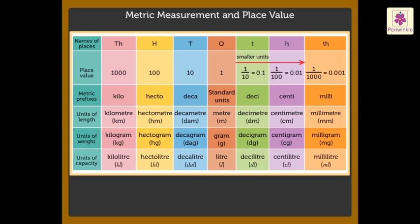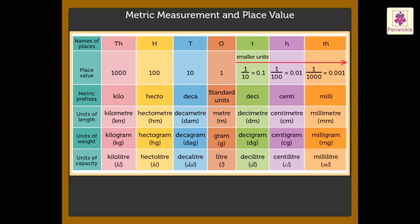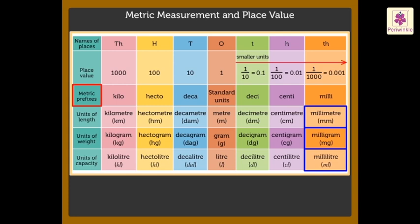Similarly, the units in the thousandths column are one thousand times smaller than, or one-thousandth of, the standard units. We name these as millimetre, milligram, and millilitre, as the prefix milli means one-thousandth.